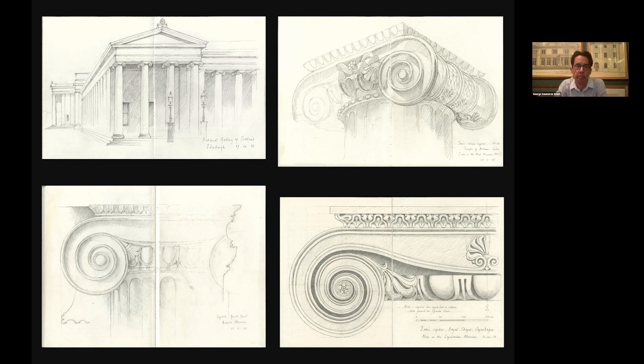On the top left now is an Ionic portico of the National Gallery of Scotland in Edinburgh. Below this is a capital from the Great Court of the British Museum in London. Both of these museums were built in the early 19th century, when the Ionic order was often chosen for buildings with a didactic function. On the right are some more Ionic capitals: the one at the top right is from the Temple of Artemis in Sardis, now in the Met in New York, and at the bottom right is a capital from the Royal Chapel in Copenhagen in Denmark.